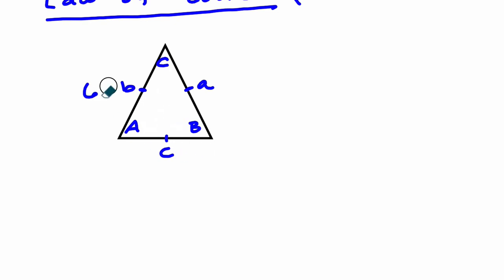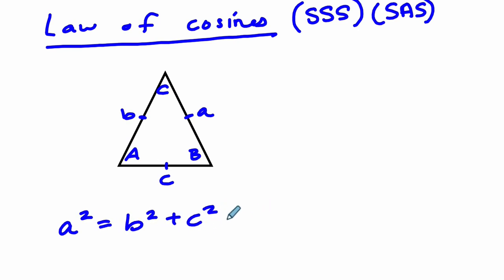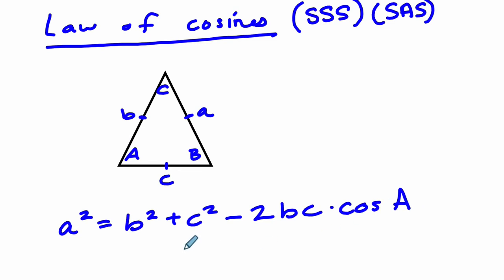So here's a generic triangle. The law of cosines is essentially the Pythagorean theorem. It says A squared equals B squared plus C squared, minus 2BC times the cosine of angle A. This works for right triangles and non-right triangles.